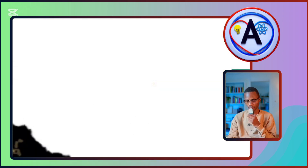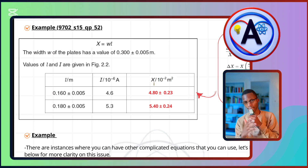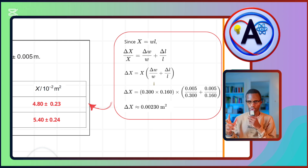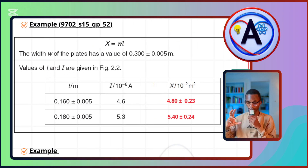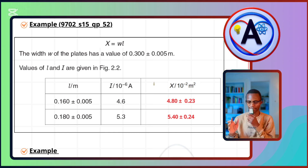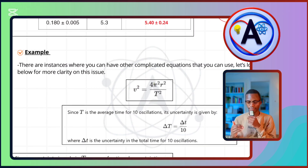Last example using the traditional method: from Winter 2015 Question Paper 5.2, if x = wl, then Δx/x = Δw/w + Δl/l, since this is multiplication. Multiply both sides by x, plug in your values, and you get 0.00230. Since it's 10 to the power of negative 2, you have 0.23 — two significant figures, which aligns with the decimal places on 4.80. Either 1 SF or 2 SF is acceptable.